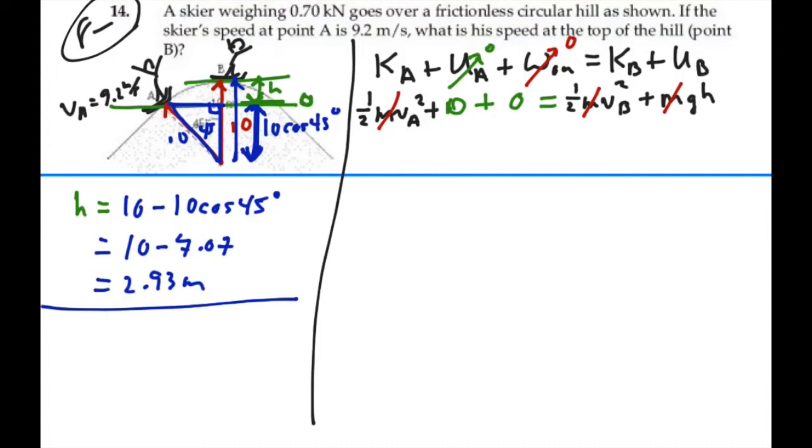And now we have that one half velocity of B squared is equal to one half the velocity of A squared minus g times H.